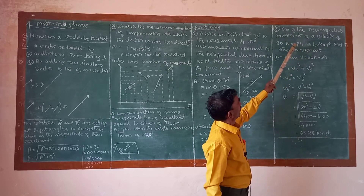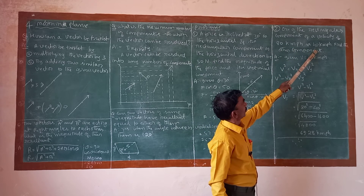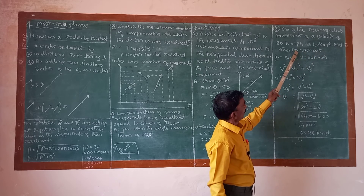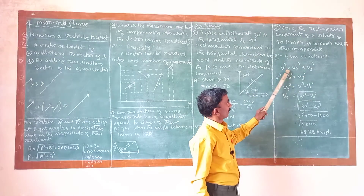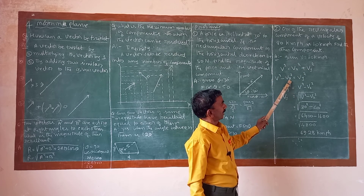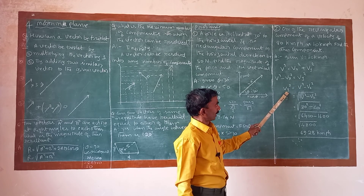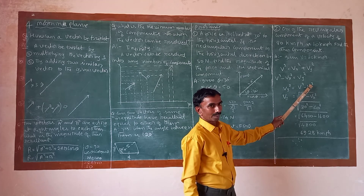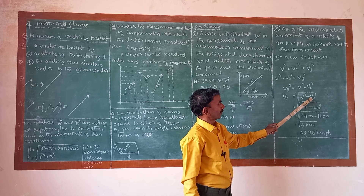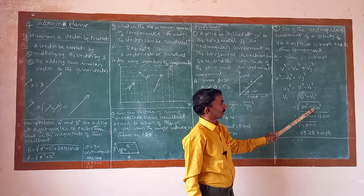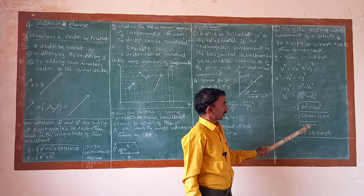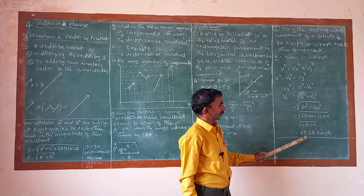One of the rectangular components of a velocity of 80 km/h is 40 km/h. Find the other component. Using V squared equals Vx squared plus Vy squared, Vy equals the square root of V squared minus Vx squared, that is the square root of 80 squared minus 40 squared. 80 squared is 6400, minus 40 squared which is 1600, gives 4800. The square root of 4800 is 69.2 km/h.